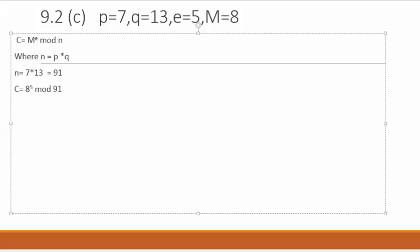We can break 8 raised to power 5 as follows: it is equal to 8^1 mod 91, 8^2 mod 91, again we can have 8^2 mod 91. So total will be 8 raised to power 5. 8 raised to power 1 plus 8 raised to power 2 plus 8 raised to power 2 will give us 8 raised to power 5.